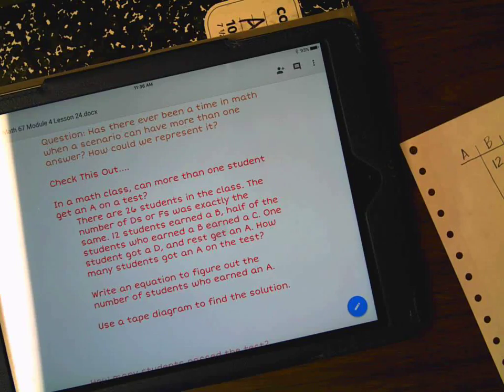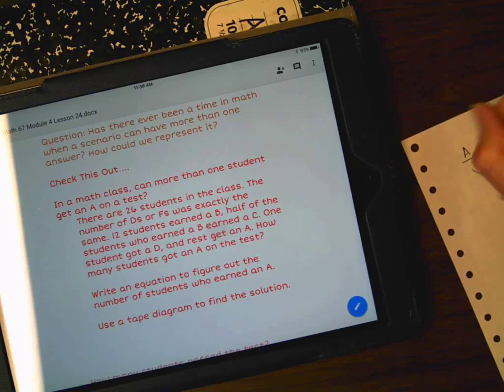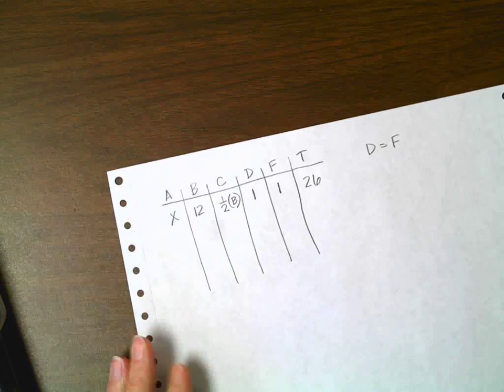Then it says one student got a D. So I know there's one in the D column. If one student got a D, then I also know that one student got an F because D and F equal each other. And then we're supposed to figure out A, so I'm putting an X in there. Here is my table to organize our information.